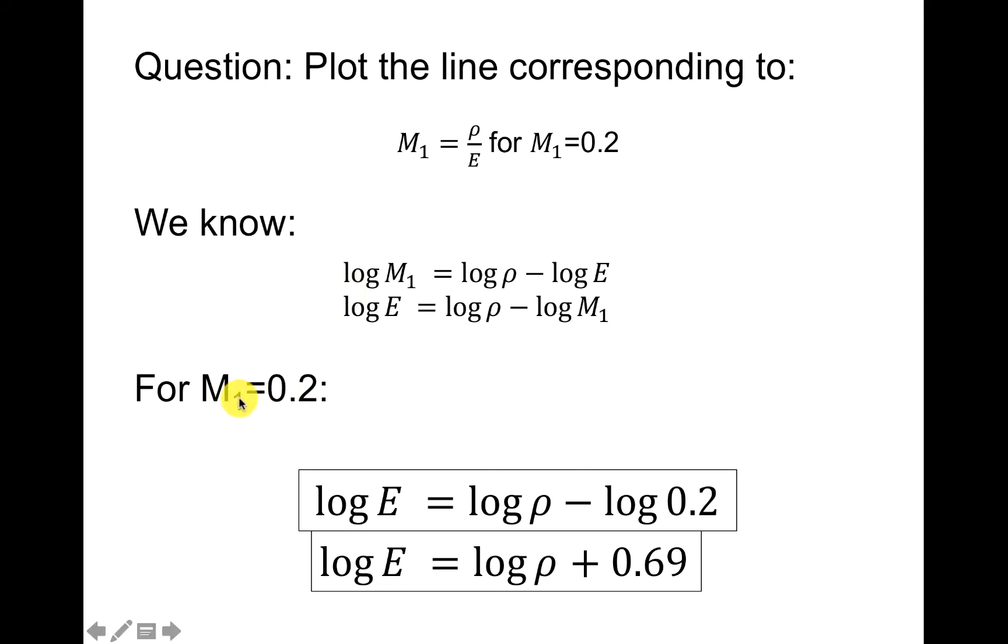So we can take M1 and we can just plug in as log of 0.2. I also can then use my calculator to determine that minus the log of 0.2 is equal to plus 0.69. So I've just done that simple math. And now we want to plot this line.